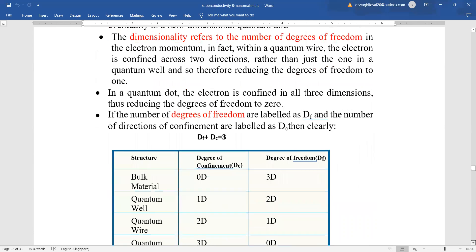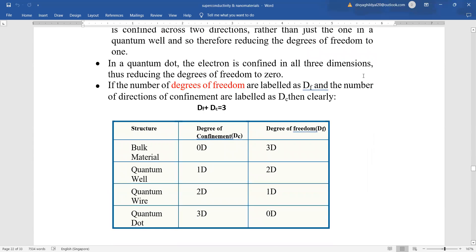In quantum dot, the electron is confined in all three dimensions thus reducing the degrees of freedom to zero. If the number of degrees of freedom are labeled as df and the direction of confinement as dc, then for bulk material degree of confinement is zero and degree of freedom is 3D. Quantum well: degree of confinement is 1D and degree of freedom is 2D. Quantum wire: degree of confinement is 2D and degree of freedom is 1D. Quantum dot: degree of confinement 3D and degree of freedom is zero. That means it is just a dot.